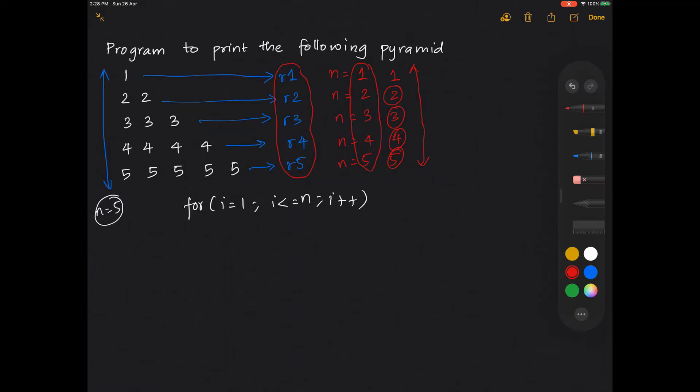So we have written the first loop: for i equals 1, i less than or equal to n, i plus plus. Now the j loop will obviously start from 1 and go all the way till i, because we need the slanting one.